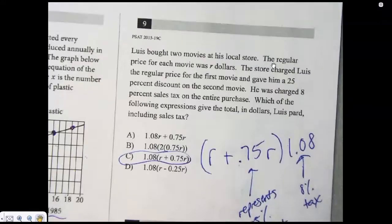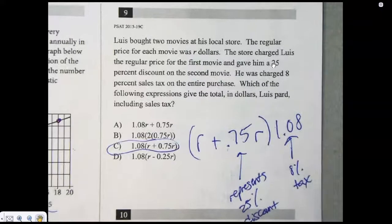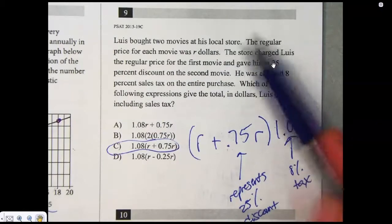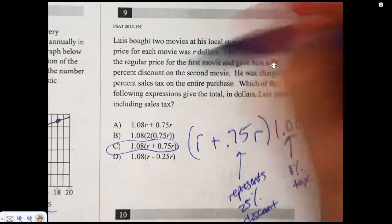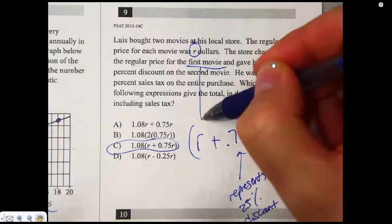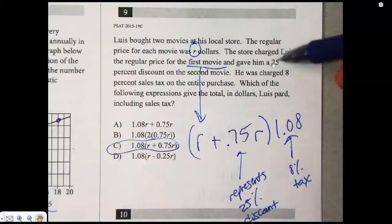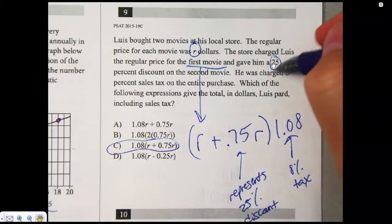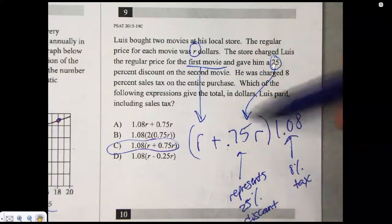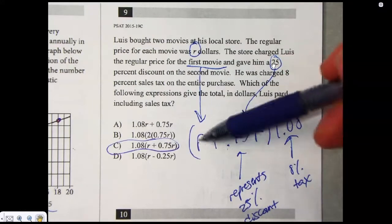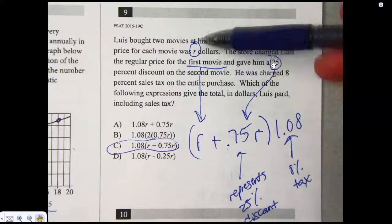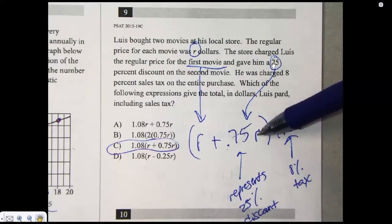Number nine, again, these are not the easiest. I think percents are pretty tricky, man. So we got our dollars. Store charge Lewis regular price for the first move. Man, our dollars. They gave him a 25% discount on the second movie, which means he only paid 75% of the original. So if this first one was $100 for a movie, then the second one's only 75. Because it's 25% off.